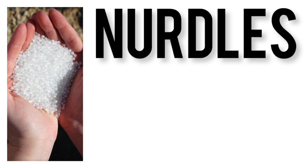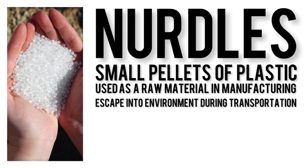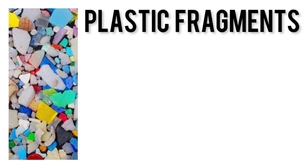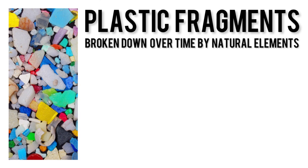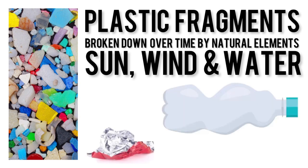As for nurdles, they are small pellets of plastic used as a raw material in manufacturing plastic products and often escape into the environment during transportation. Lastly, plastic fragments — or secondary microplastics — are small pieces of plastics that have been broken down over time by natural elements such as the sun, wind, and water. Any plastic item you use has the capability of breaking down into microplastics, whether it be a plastic water bottle or candy wrapper.